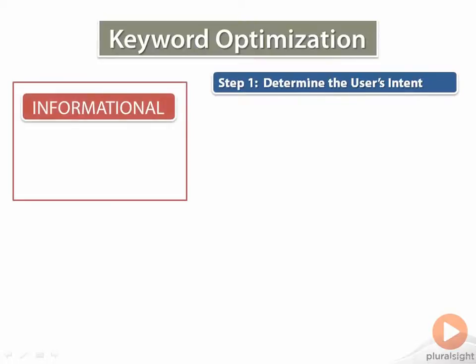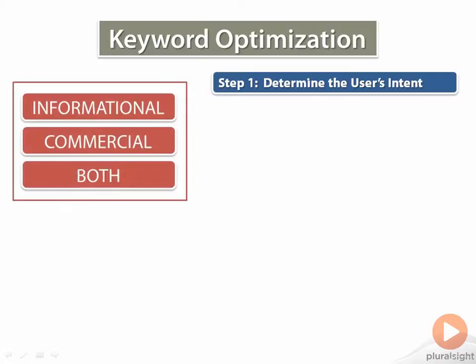The three categories are: 1. Informational, 2. Commercial, or 3. Both. Having a clear understanding of the purpose of your content, and where you want it to go, will help you in selecting your keywords.